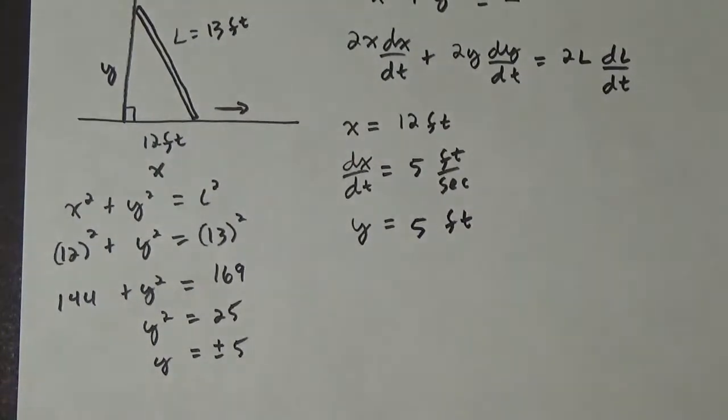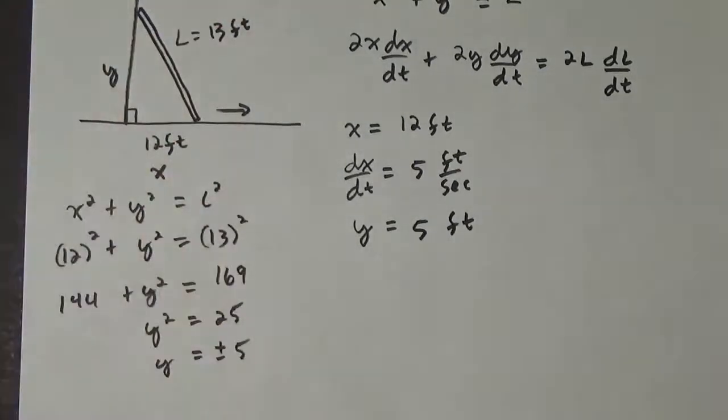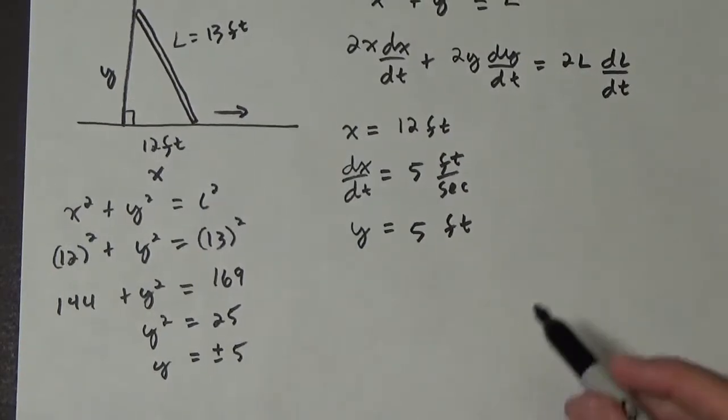Now some of you might have recognized, oh hey, this is going to be a 5, 12, 13 triangle, which is fine. But if you didn't, then just use the Pythagorean theorem.